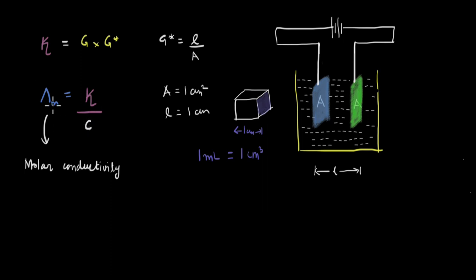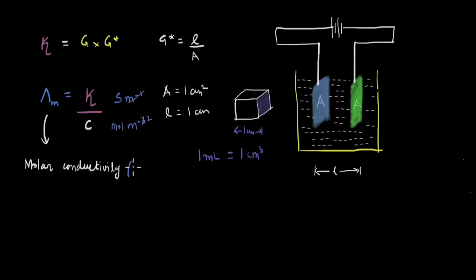Looking at units of molar conductivity: kappa in SI units is Siemens per meter, and concentration is in moles per meter cubed. Dividing, the units of molar conductivity become Siemens·meter² per mole.